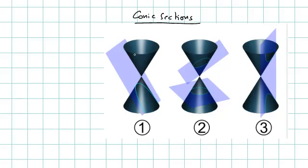This is the cone. This is the axis of the cone passing through the tip — the vertex of this cone — and perpendicular to this base is the axis of the cone.